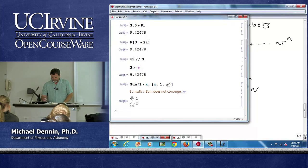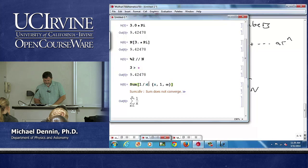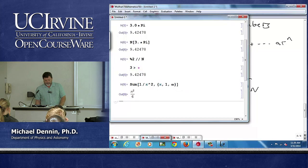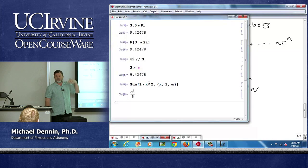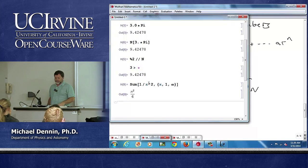However, if I make it one over x squared, it does converge, and I get pi squared over six. So I can do infinite series, I can do finite series.